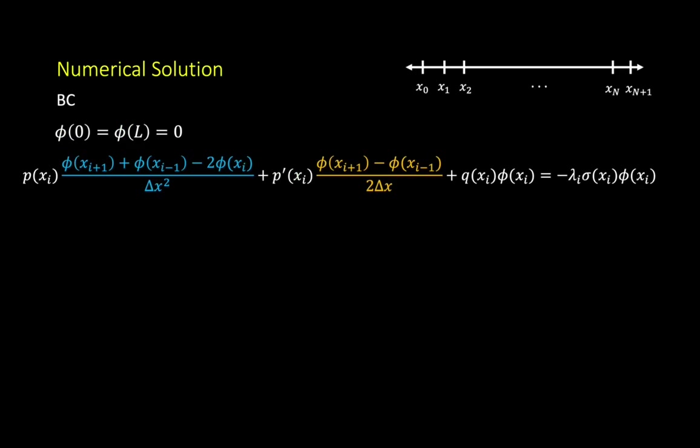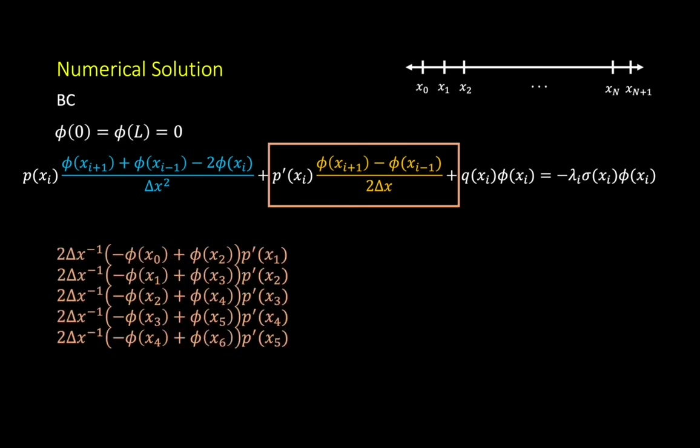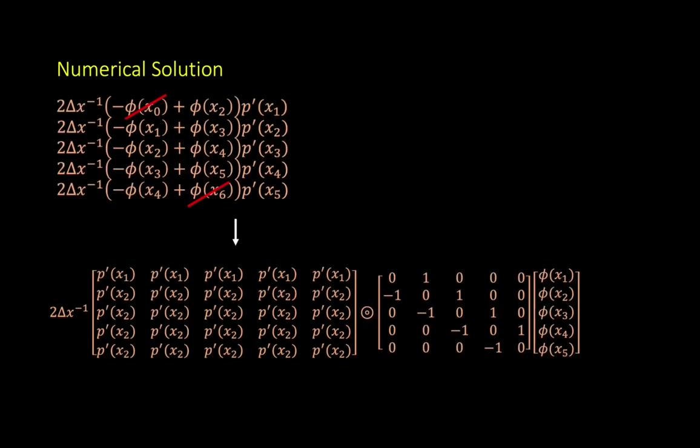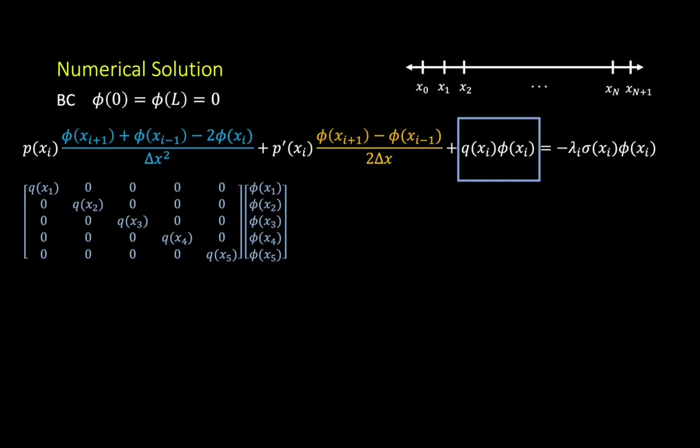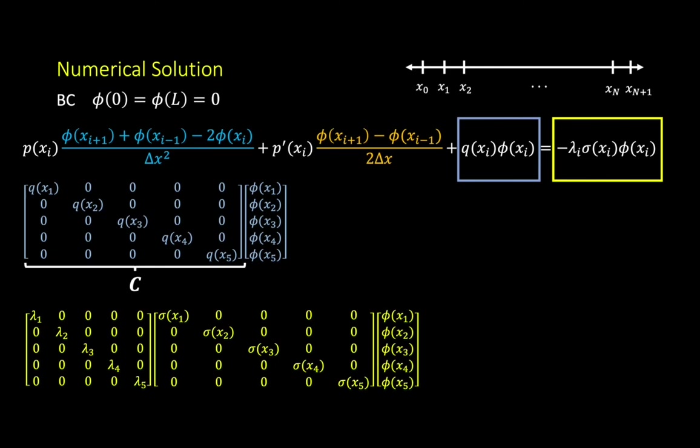Similarly, the first derivative term in the approximated version of SLEP can be represented as a system of equations. This system of equations can be represented as the following matrices. We will call the terms in front of the matrix of phi as B for the future reference. The Qx term in SLEP can also be represented in the matrix form as shown here. We will call the diagonal matrix of Q as C for the future reference. The right-hand side of the SLEP is also represented in the matrix form as shown in the bottom of the slide.